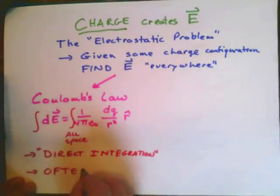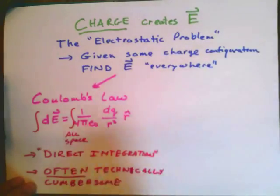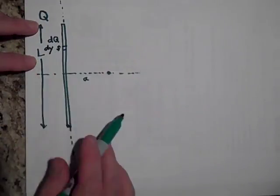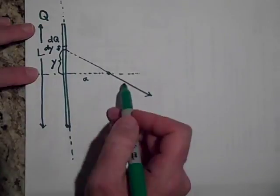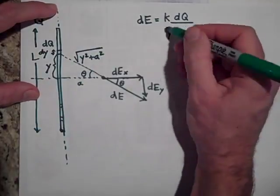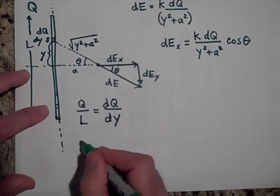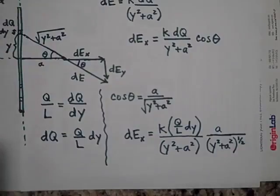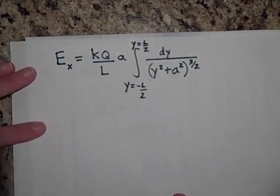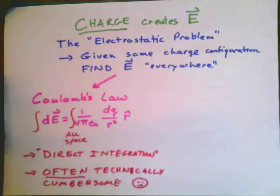However, direct integration is often technically burdensome or complicated. For example, here on the internet I found a demonstration of applying direct integration of Coulomb's law to find the electric field due to a line of charge. As you can see, just setting up the problem requires a fair amount of cumbersome trigonometry and calculus. Running it at about ten times speed, we only get to where we set up the integral without actually solving it. So generally we want to avoid doing direct integration if we can.